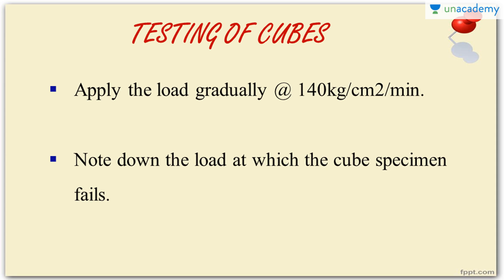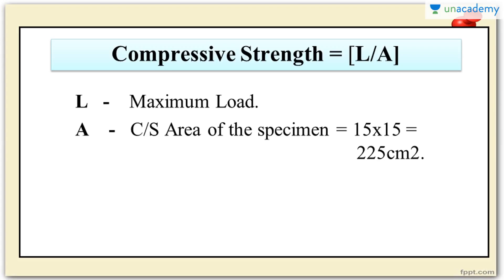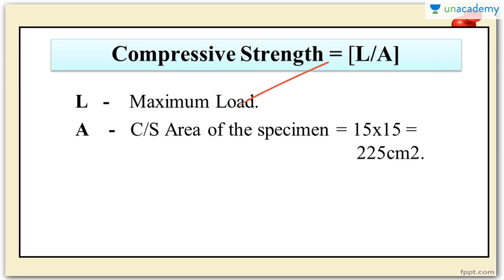On the dial there will be two needles — one black and one red. Once the concrete fails, the red needle keeps at one point and the black needle comes down to zero. That reading where the red needle points is our maximum load. Take a minimum of three readings for each specimen or each time period. The compressive strength is simply load divided by area, with units of Newton per mm². The load is the maximum load from the dial and the area is the cross-sectional area of the specimen — 15 cm × 15 cm, giving 225 cm².